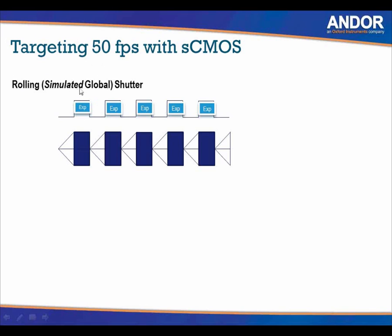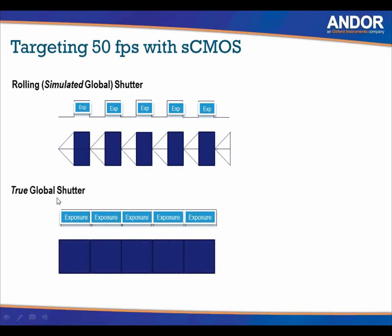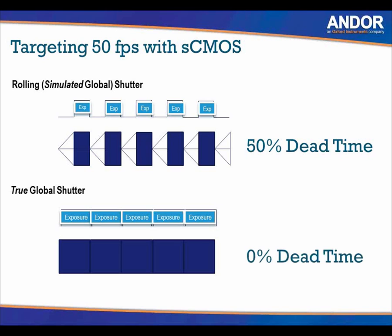Targeting 50 frames per second with sCMOS using simulated global shutter: with the rolling shutter camera simulating global, there is a transient phase at the start, then the exposure, then the next frame begins. All the time between frames during the transient phase is essentially dead time — the camera is not receiving any information. With a true global shutter mode, there is no dead time from frame to frame, so the camera receives more light and achieves a higher signal-to-noise ratio. Using a 4T rolling-shutter-only camera to simulate global shutter results in 50% dead time and therefore a lower signal-to-noise ratio.